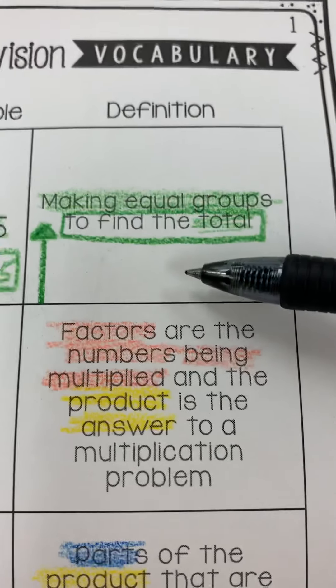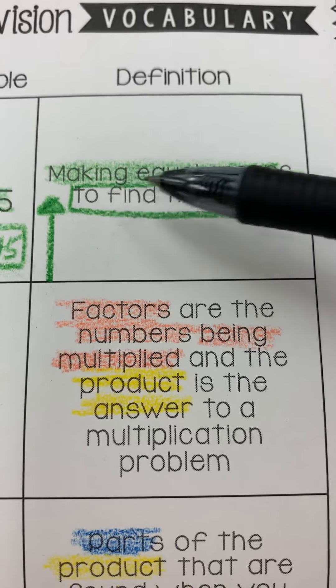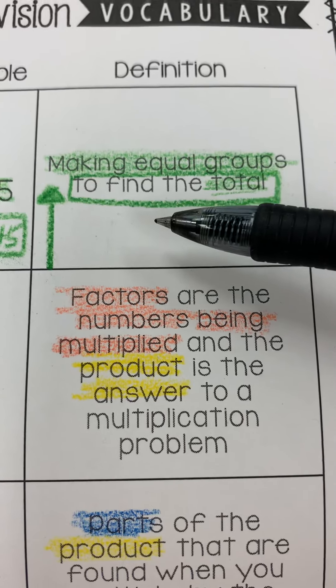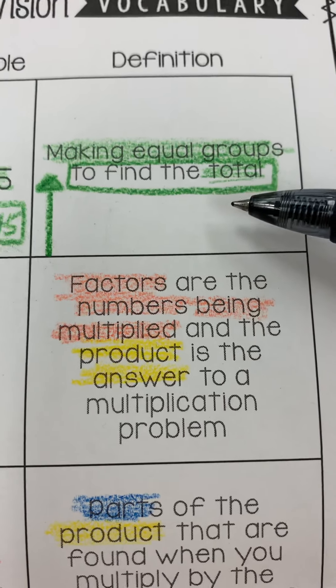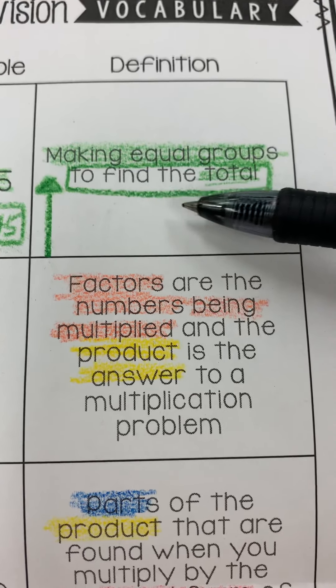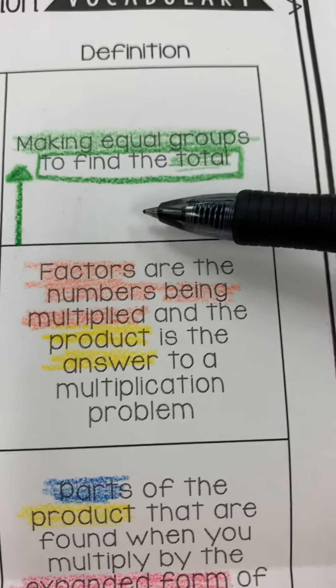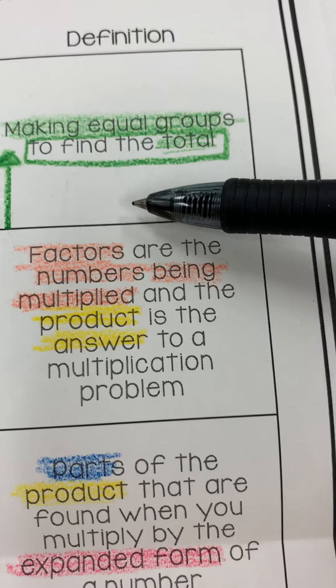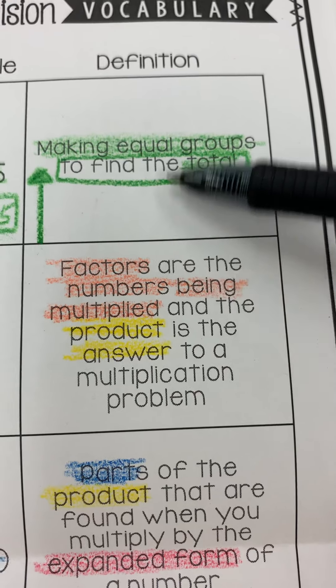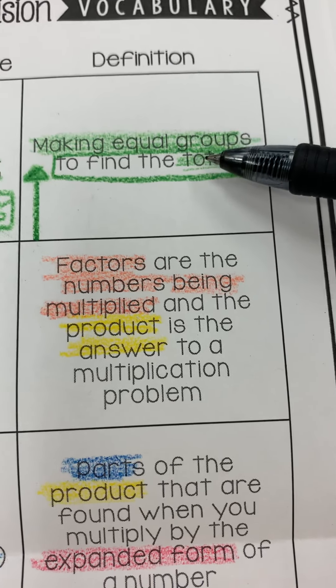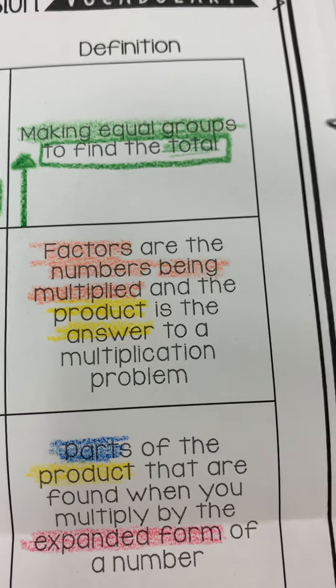The definition says making equal groups to find the total. Remember those words - to find the total. That means your answer is going to go up. Anytime you're looking for the total, your answer goes up. Equal groups is the clue that it's going to be multiplication.